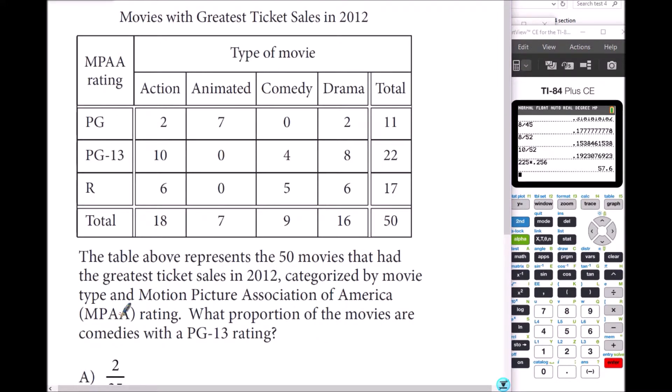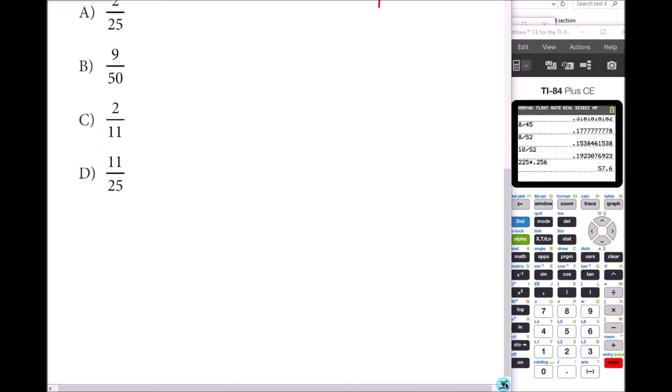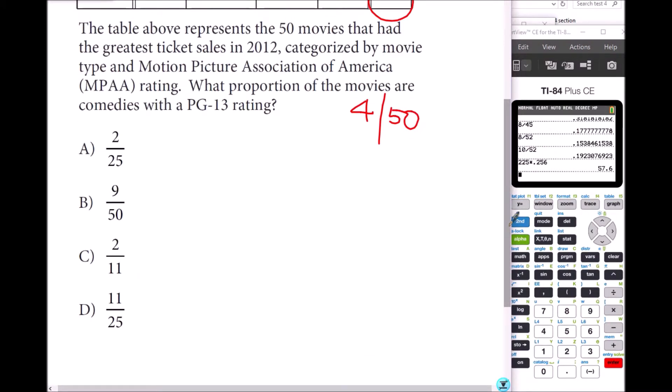Number 7: The table represents the 50 movies that had greatest ticket sales in 2012. What proportion of the movies are comedies with PG-13 rating? Comedies with PG-13 is 4 out of the whole thing, not just from PG-13. So it will be 4 over 50. If you simplify by 2s, top and bottom, you get 2 over 25.